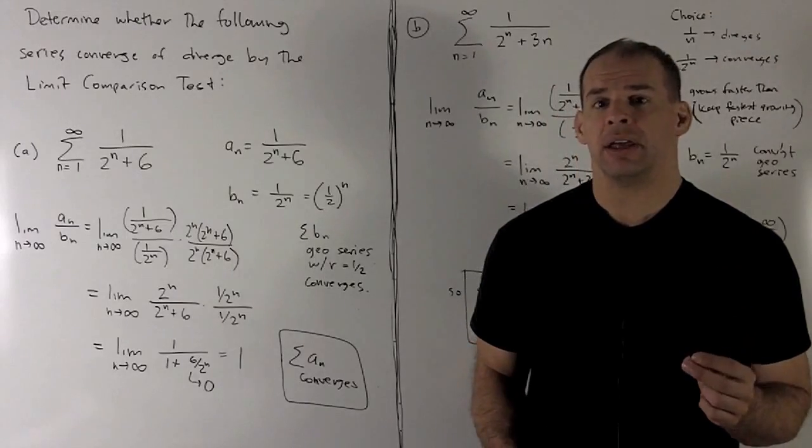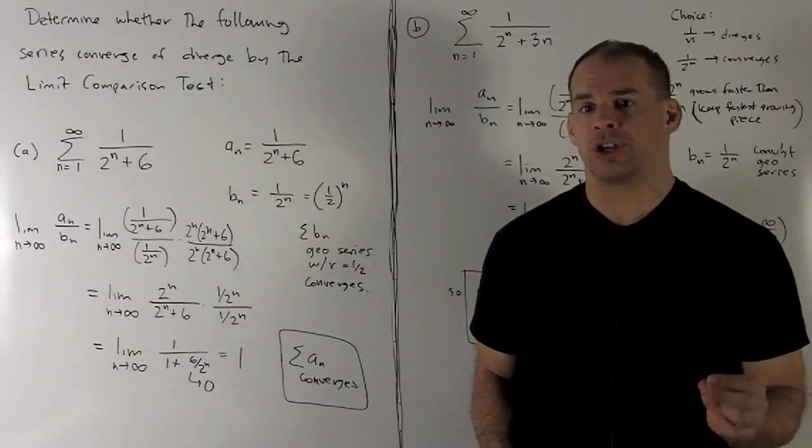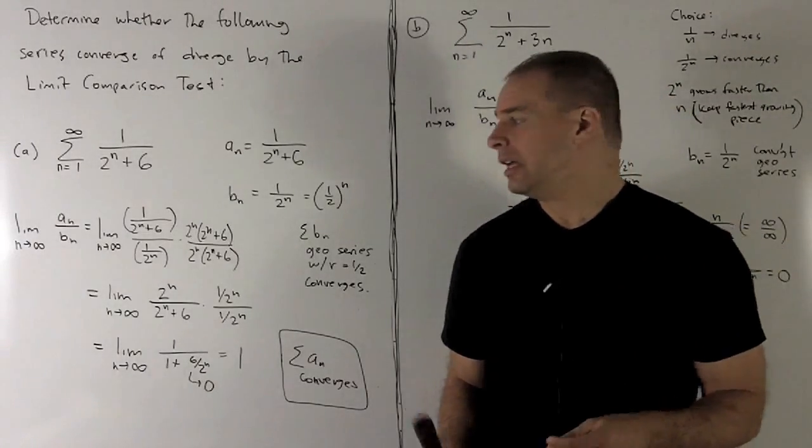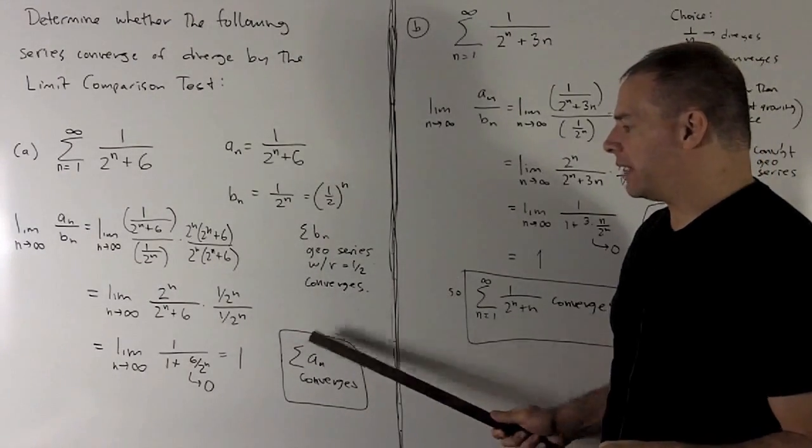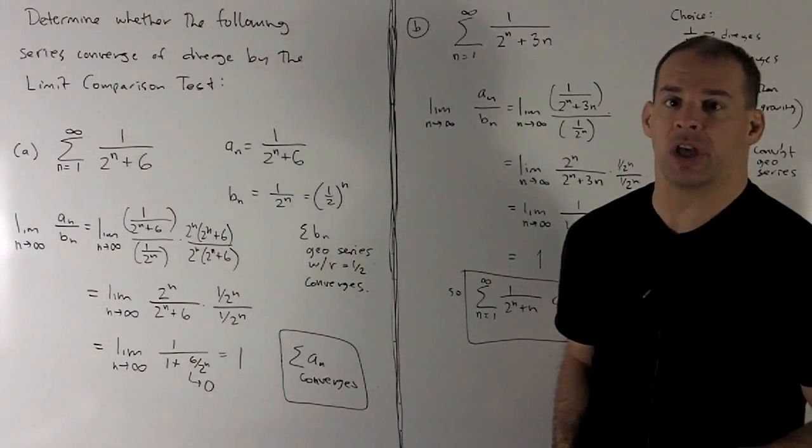That means these two series are either going to converge together or diverge together. Since our b sub n converges, that's going to mean that the series for a sub n converges also.